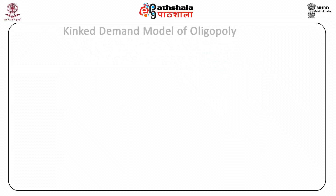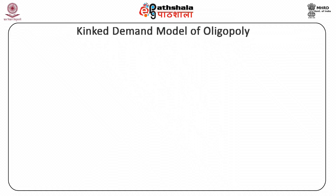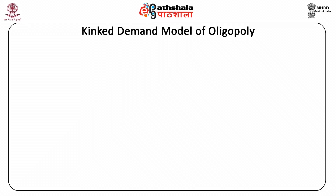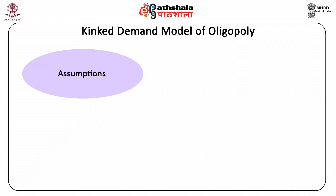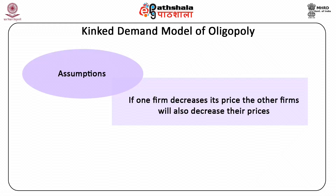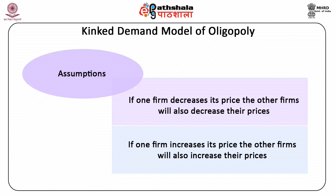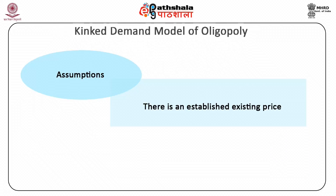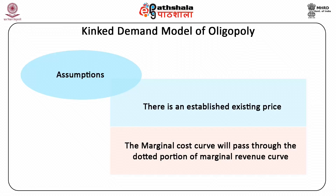Let us now look at the kinked demand model of oligopoly, also known as Sweezy's Kinky Demand Curve Model. This model is regarded as the most important model of non-collusive oligopoly. It does not explain price determination but explains why price rigidity prevails in oligopoly. This model is based on the following assumptions: if one firm decreases its price, the other firms will also decrease their prices; if one firm increases its price, the other firms will also increase their prices; there is an established existing price; and the marginal cost curve will pass through the dotted portion of the marginal revenue curve.